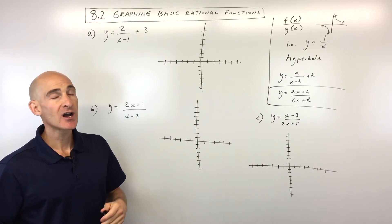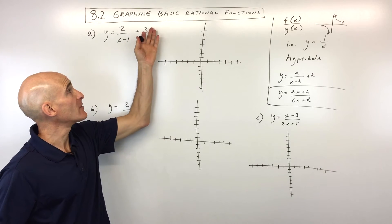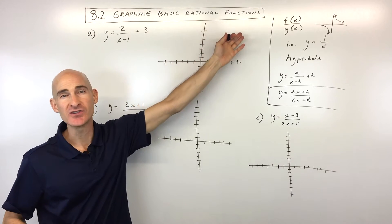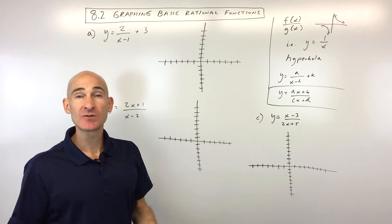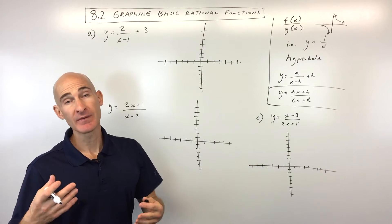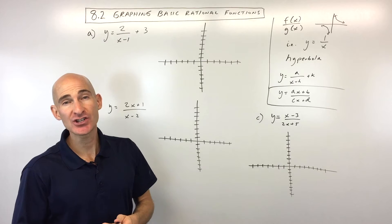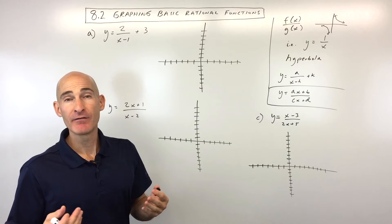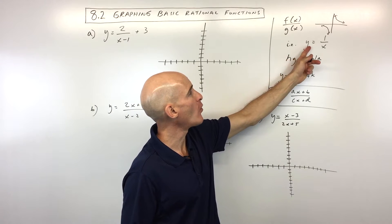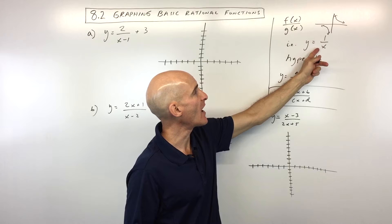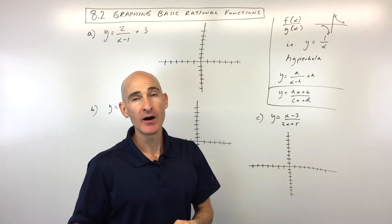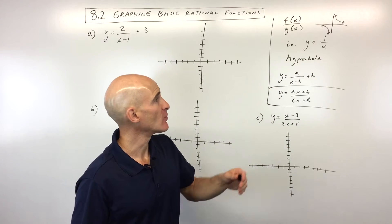Lesson 8.2, we're going to talk about graphing basic rational functions. In the last lesson, we talked about inverse variation functions, which were in the form y equals 1 over x. These are a special type of rational function.